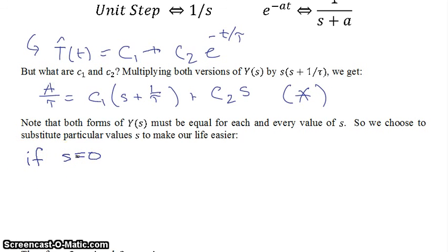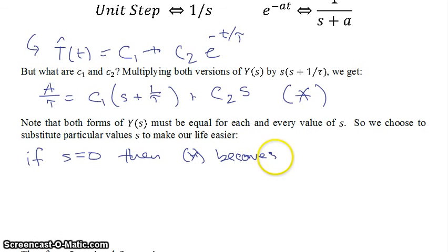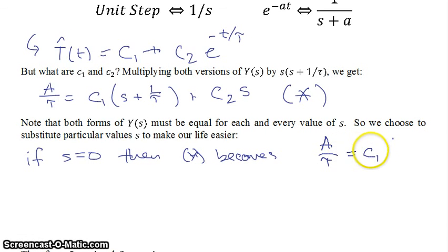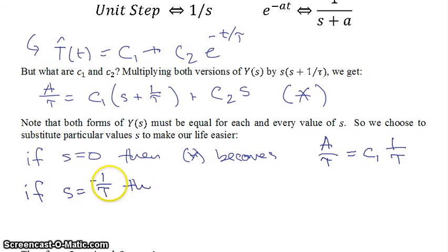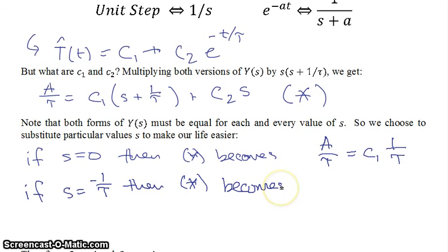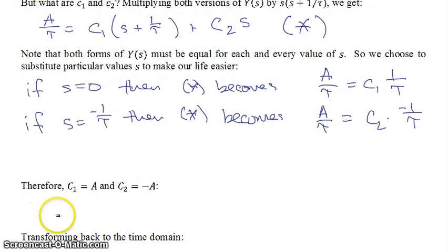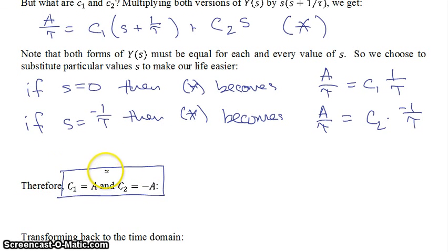For example, if s equals 0, equation star becomes: A over tau equals C1 times 1 over tau, so C1 equals A. Solving for C2 similarly gives C2 equals minus A.